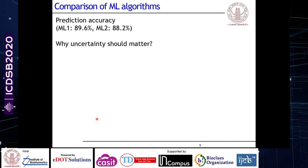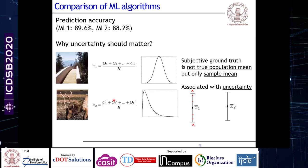That brings us to the next question: why should uncertainty matter? I've taken a couple of examples to illustrate the point without going into too much detail, but I hope that will be enough to convey the basic idea.